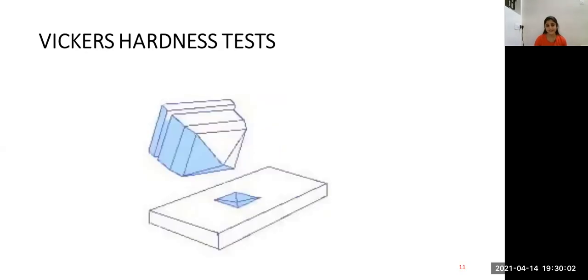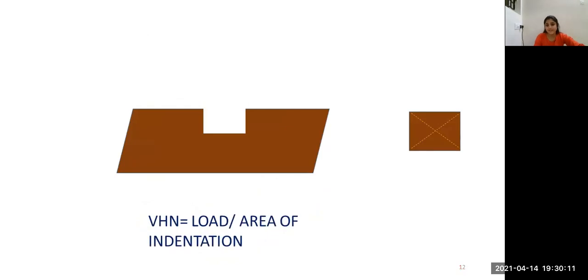Coming to the Vickers hardness test, a pyramid-shaped diamond indenting tool is used as an indenter and when this is pressed on the surface of the object, a square-shaped indentation is obtained. The length of the diagonals of the indentation is measured and averaged, and then it is calculated using the formula load by area of indentation. Vickers hardness test is used to measure brittle materials and hence we can measure the tooth structure.